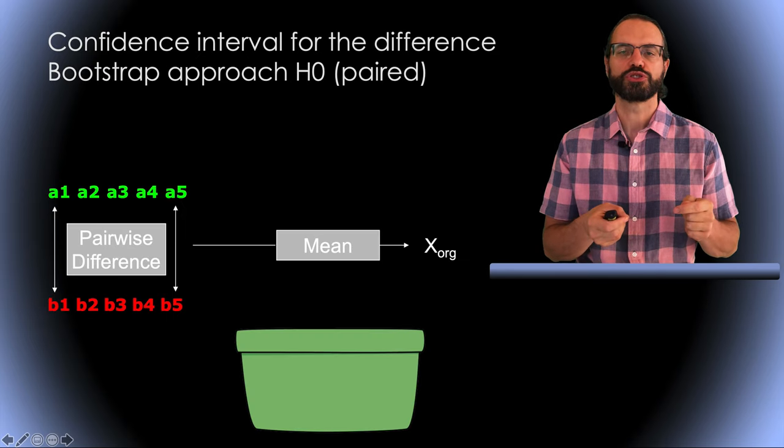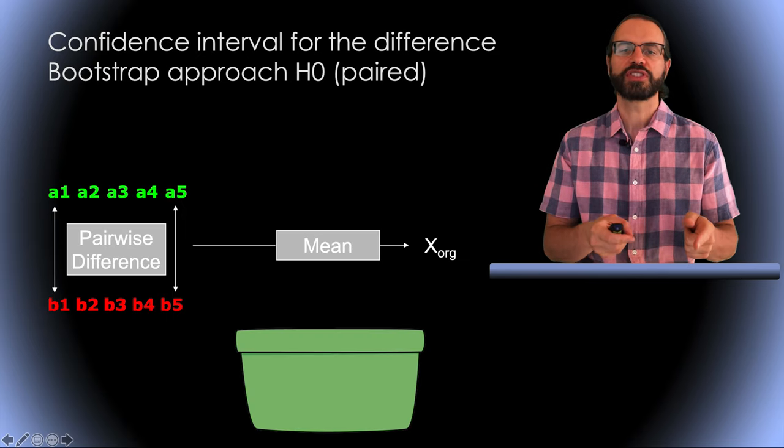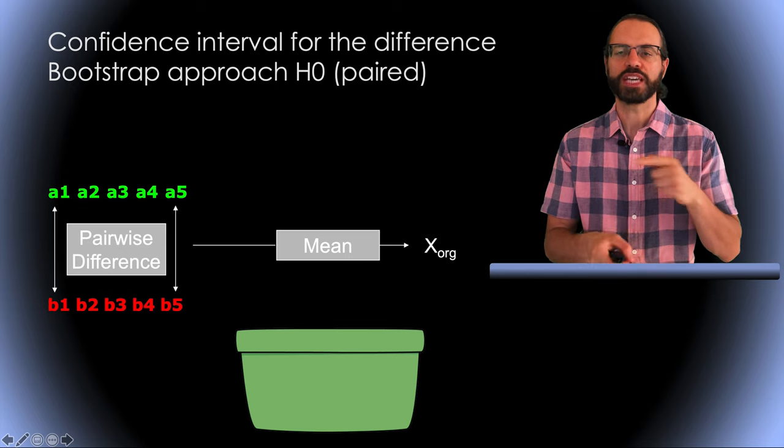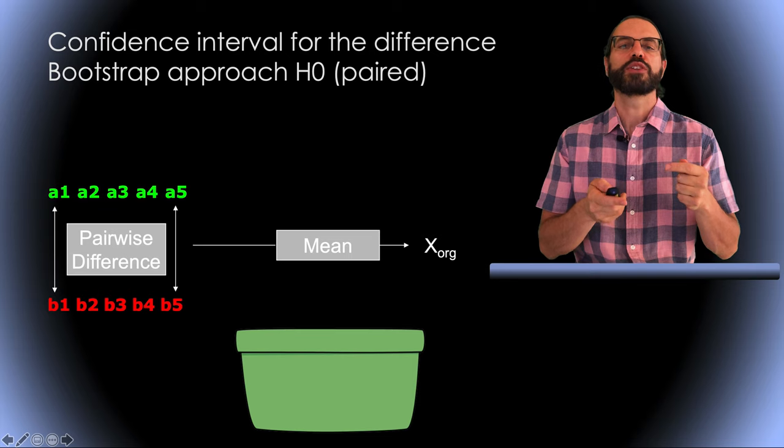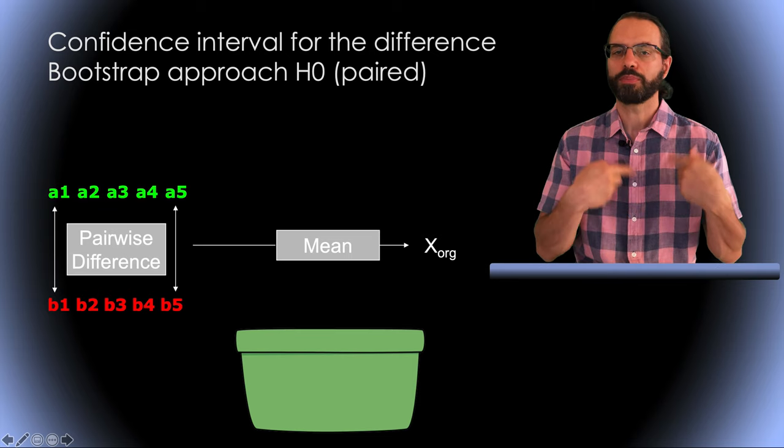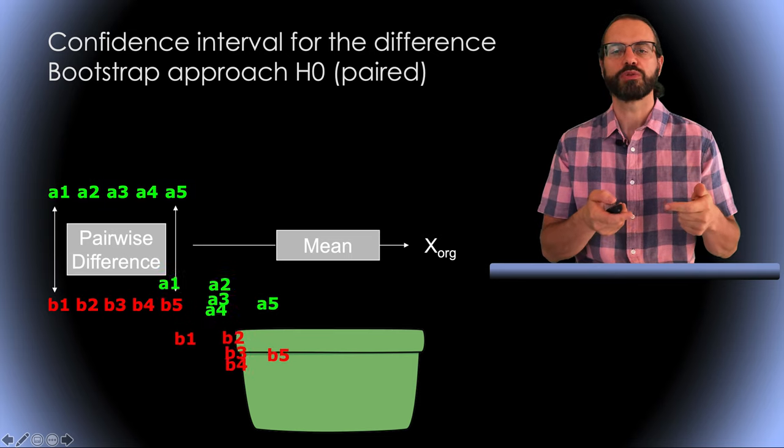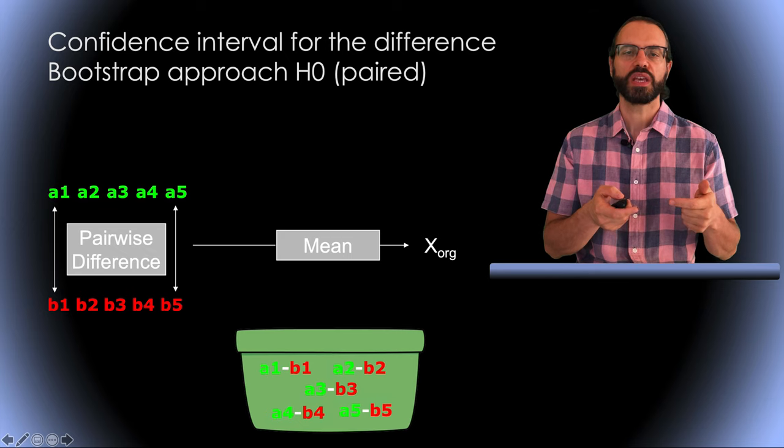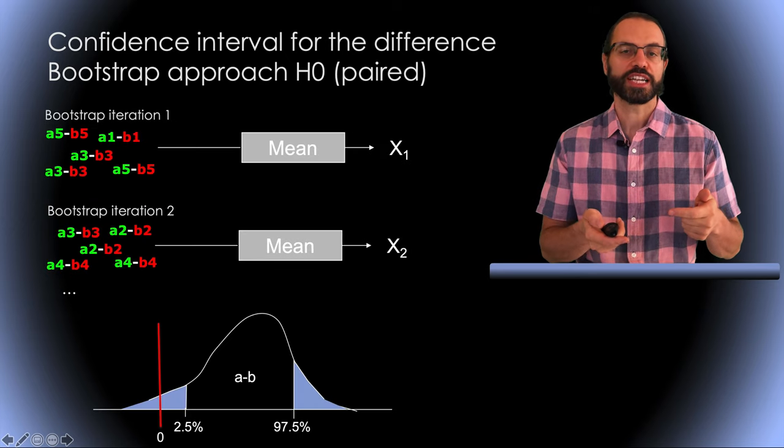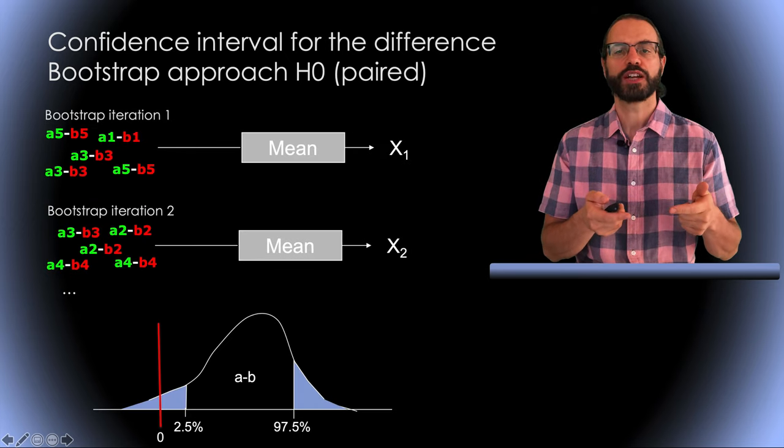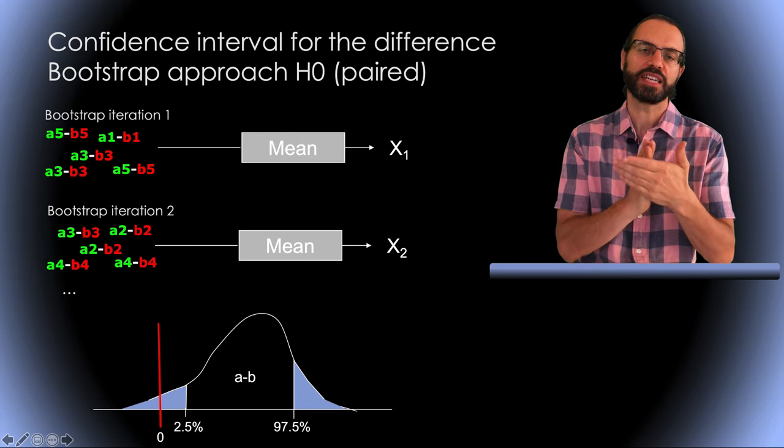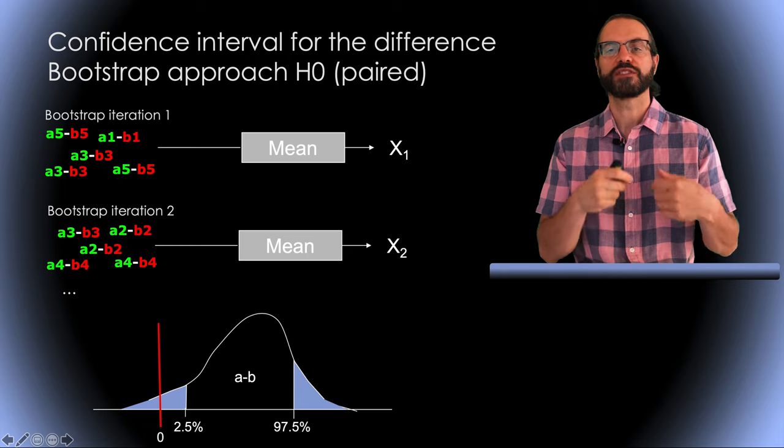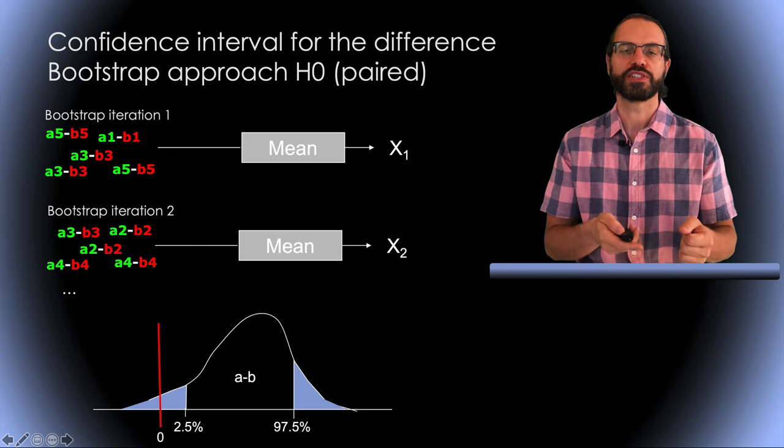So this is illustrated here. So we have two sets of paired values A and B. We take the difference and then the mean. Then we put all this difference in our bucket and we draw it with a replacement. We get a collection of Bootstrap differences value from which we can build the distribution. If zero lies in the tail, we can conclude that the difference estimate is significantly different from zero.